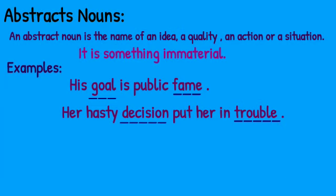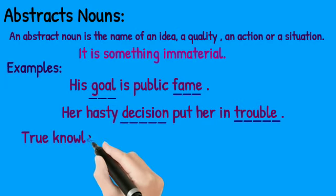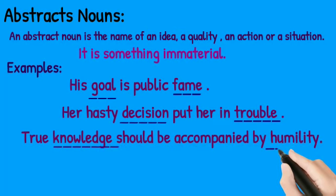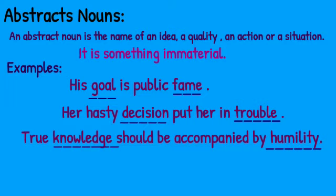Now move to the next example: her hasty decision put her in trouble, and true knowledge should be accompanied by humility. Among the abstract nouns above, knowledge refers to an idea, humility to a quality, decision to an action and trouble to a situation. So all the above underlined nouns are abstract nouns as you can't see or touch these nouns.